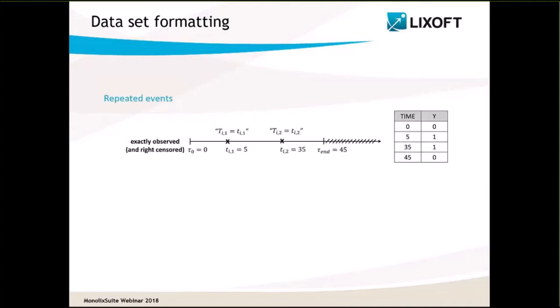In the case of repeated events, several exactly observed events can be represented with their time and the value 1. Moreover, the end of the observation period must be indicated in the dataset. This is important because it indicates that no event has occurred between the time of the last event and the end of the observation period. If you forget it, then you assume you don't know what happened after the time of the last event, which is not true.